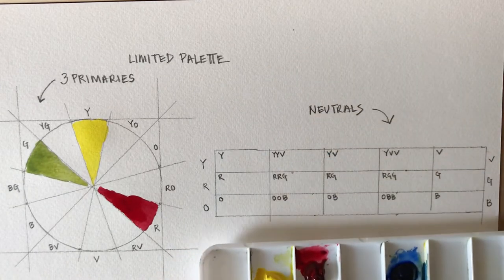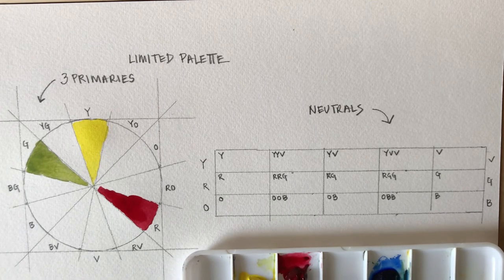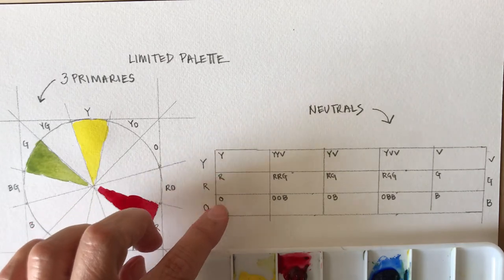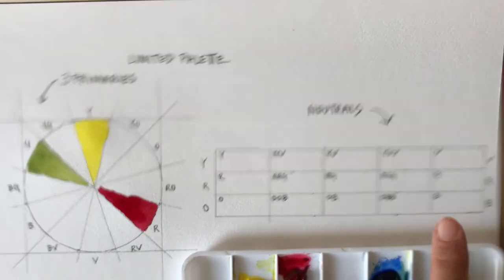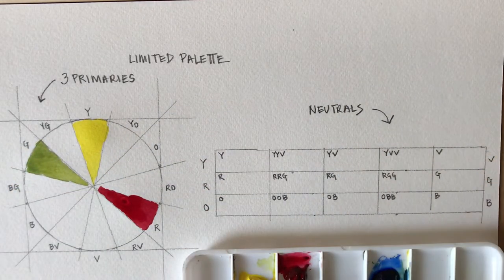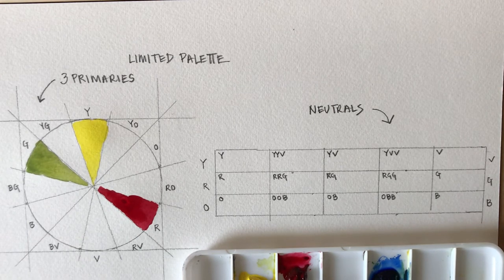The second part of this exercise is working with neutrals. So with the neutrals, in this neutral chart, I have yellow, red, and orange, and I have violet, green, and blue. On either side of this panel, we have compliments, and we want to move them in towards each other so that they can create neutrals. So let's give that a try.